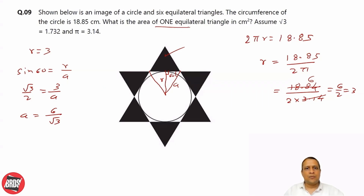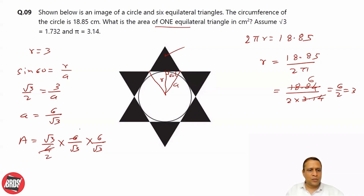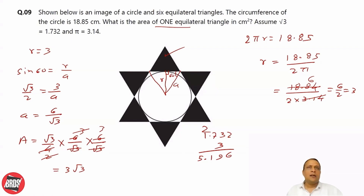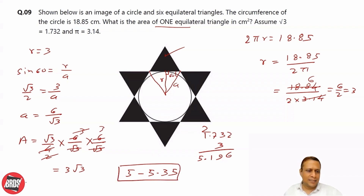We are looking for area of one equilateral triangle. Area of an equilateral triangle is given by (√3/4) × side². That is (√3/4) × (6/√3) × (6/√3). So, 2 × 2 are 4, 3 × 2 are 6, and √3 × √3 is 3 — so these cancel. The answer to this question is 3√3. Taking √3 = 1.732, you get 1.732 × 3 = 5.196. So, 5.196 cm² is your answer.